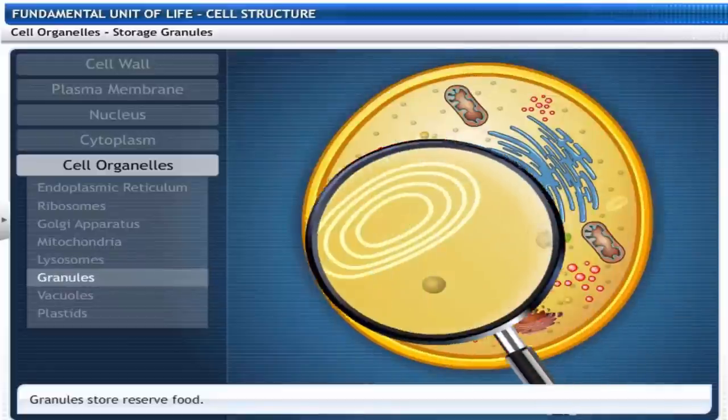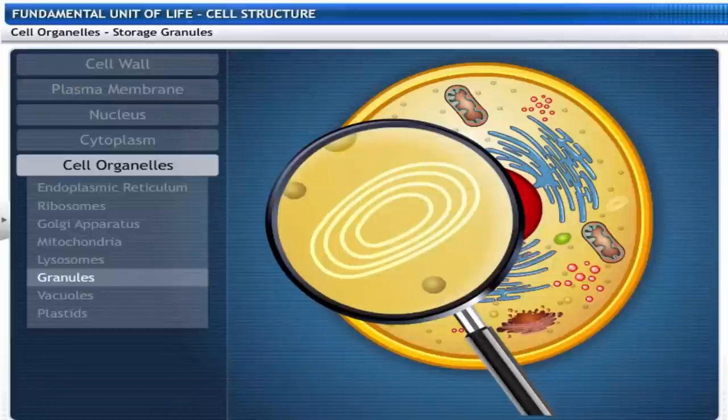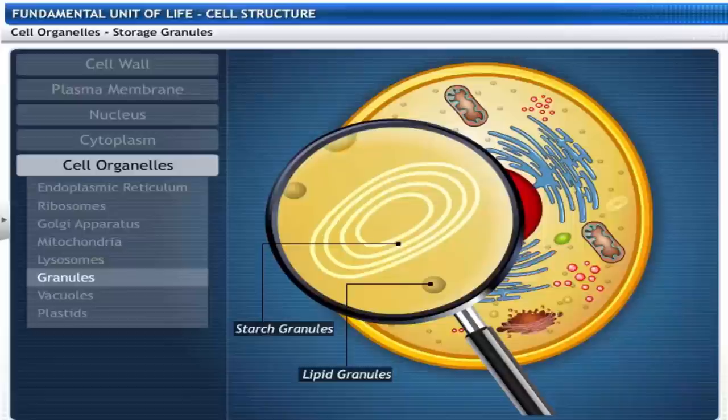Let's now focus on the storage granules. They are of two types. Starch granules are storage droplets of starch. Lipid granules are storage droplets of fat.